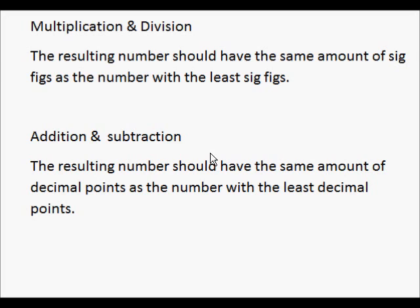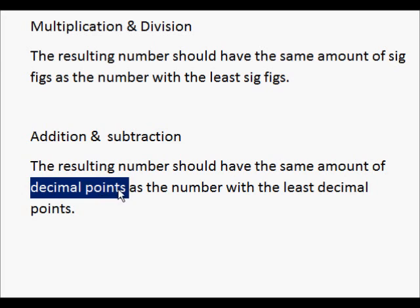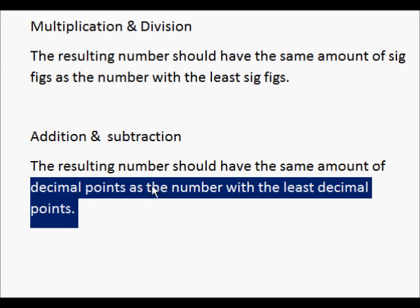Now that we know how to count the significant figures in a number, we need to perform operations properly. For multiplication and division, the resulting number should have the same amount of significant figures as the number with the least significant figures. For addition and subtraction, the resulting number should have the same amount of decimal points as the number with the least decimal points.